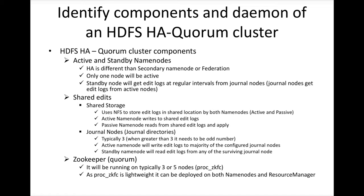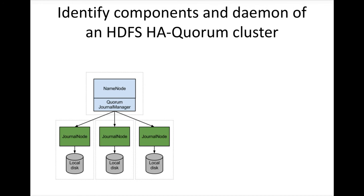ZooKeeper will primarily be running on either three or five nodes. The process will be running as hdfs namenode underscore zkfc. ZKFC stands for ZooKeeper Failover Controller. It is lightweight and can be deployed on both name nodes and resource managers. Typically it will be deployed on three nodes; if you want more, you can go up to five or any odd number.